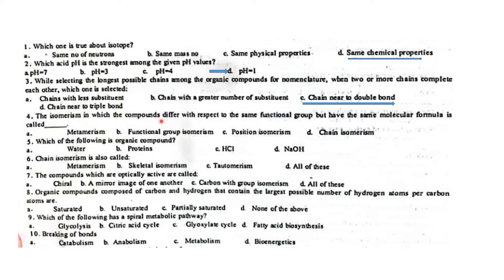The isomerism in which compounds differ with respect to the same functional group but have the same molecular formula is called functional group isomerism.